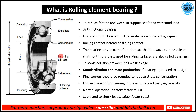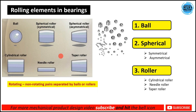Rolling elements are categorized into different types: balls; spherical elements, which include asymmetric and symmetrical types; and rollers, which include cylindrical rollers, needle rollers, and taper rollers. These rolling elements sit between the outer race and the inner race. When balls are used we call it a ball bearing; when rollers are used we call it a roller bearing; and there are also spherical bearings.